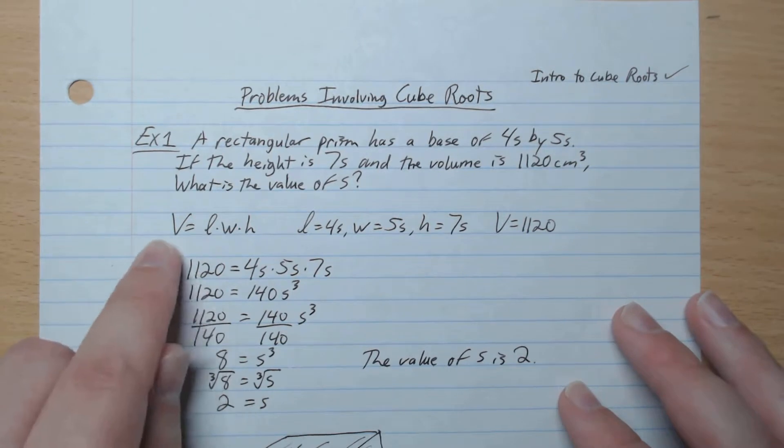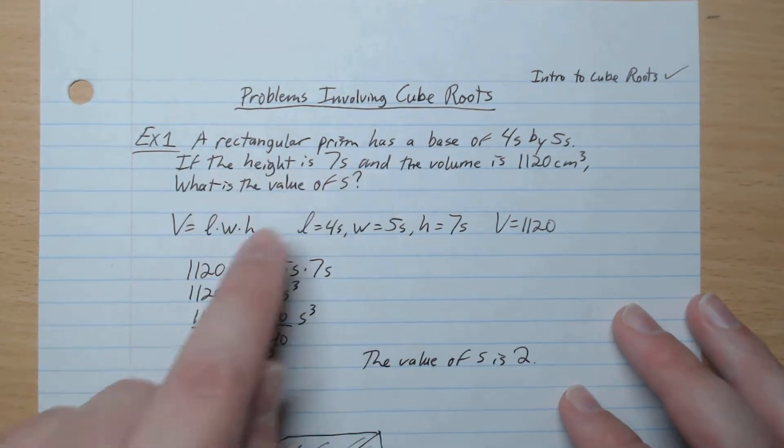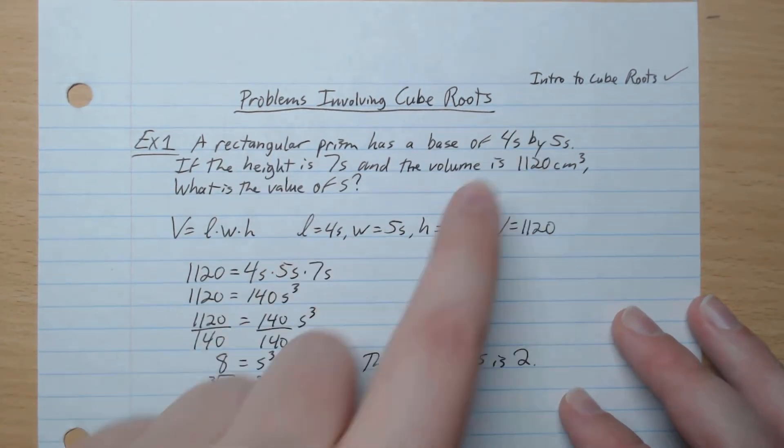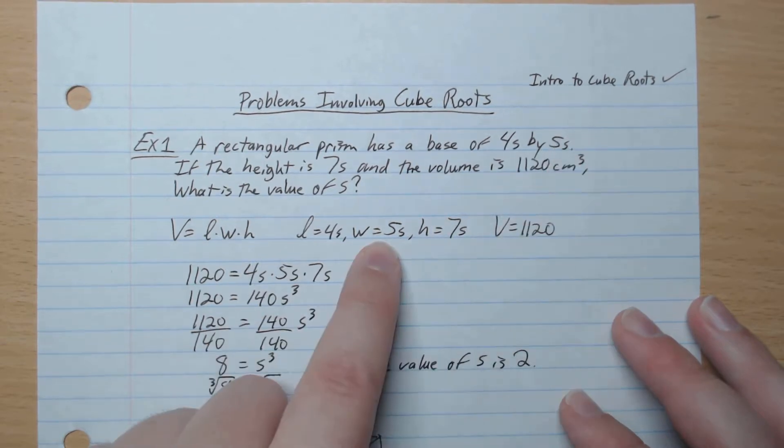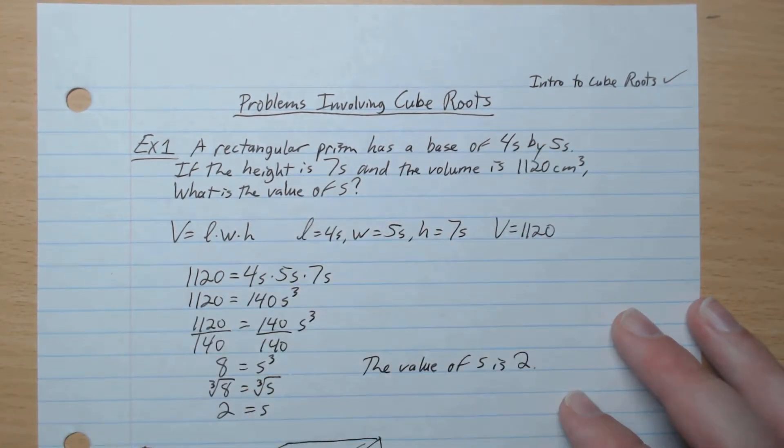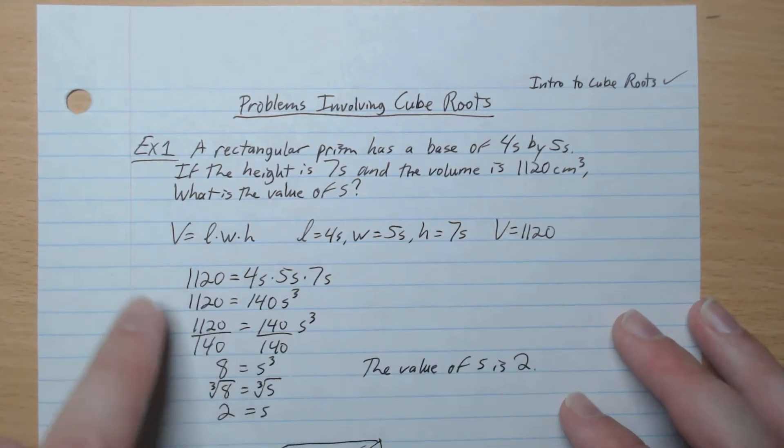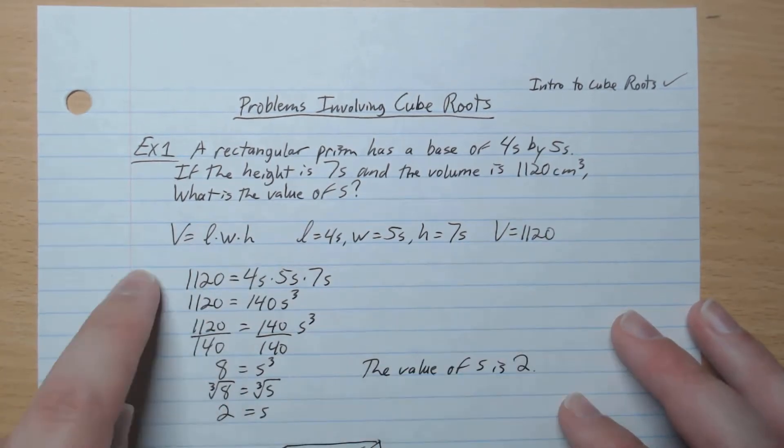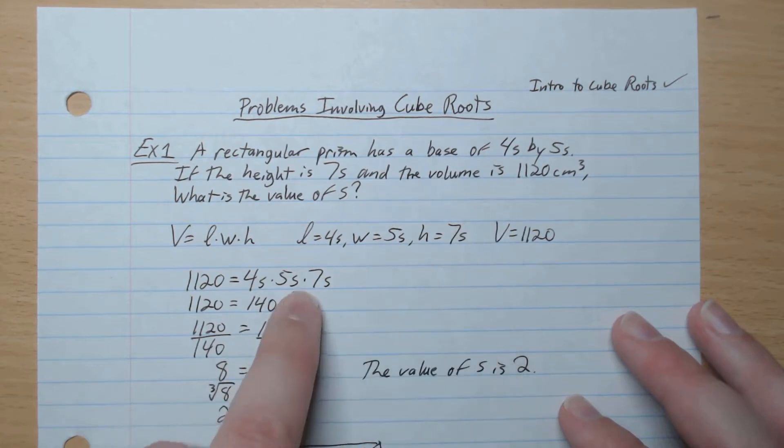So we have volume equals length, width, height for rectangular prism. L is 4s, width is 5s, height is 7s, and volume 1120. So we plug in what we know into our equation, so our volume 4, 5, and 7 like that,